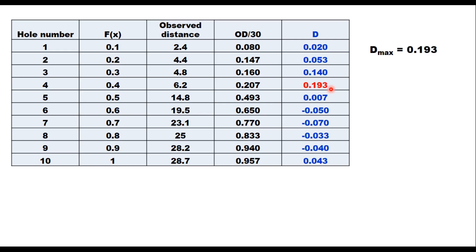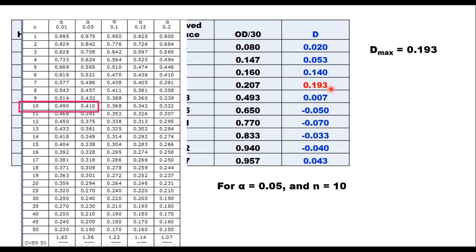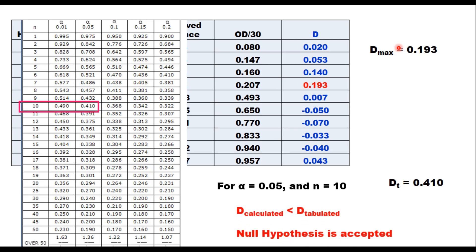So d-max is 0.193. For alpha equal to 0.05 and sample size n equal to 10, we enter the standard table to get the critical value, which is 0.410. Since the calculated value 0.193 is less than the tabulated value 0.410, we accept the null hypothesis that these holes are uniformly distributed on the plate.